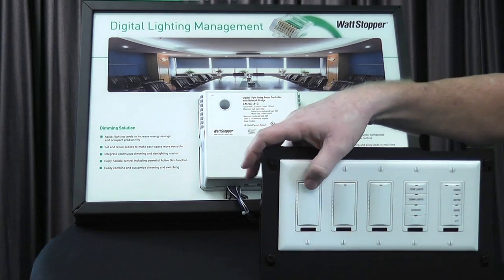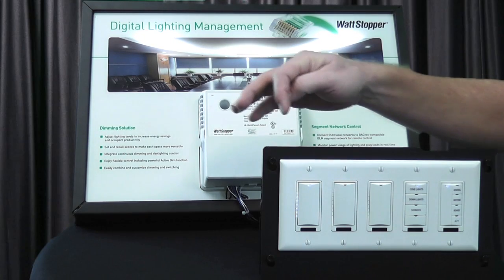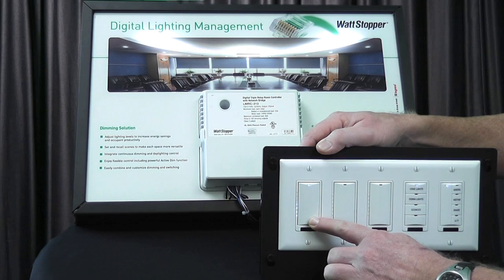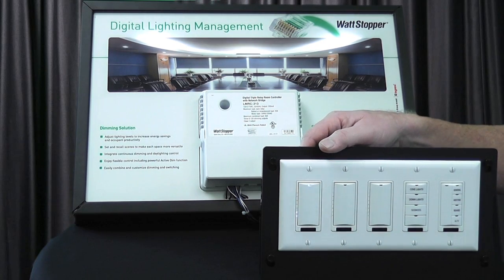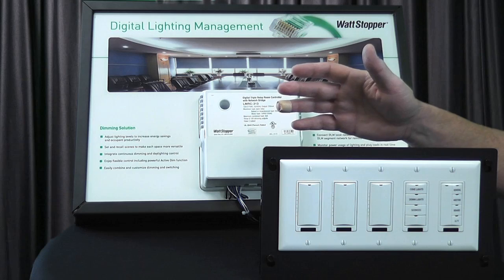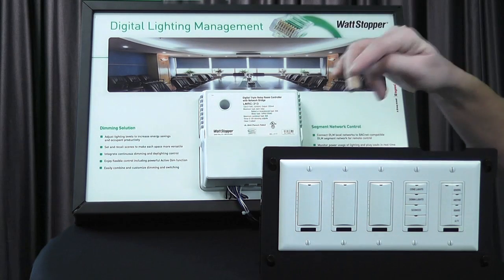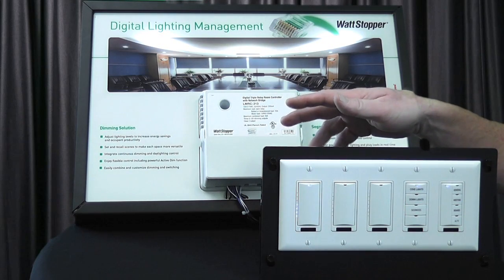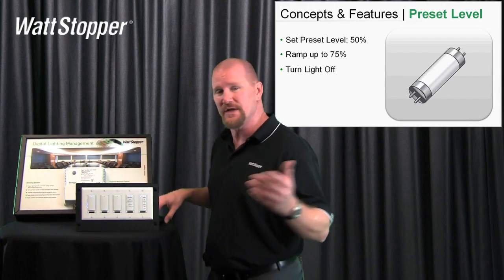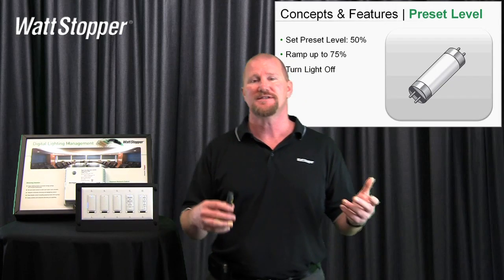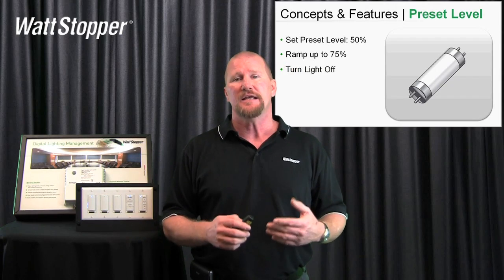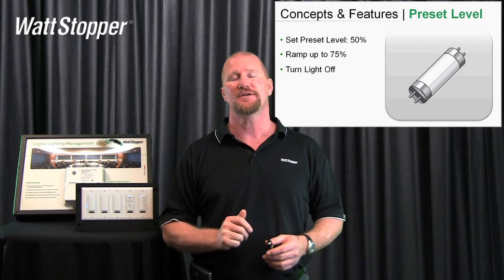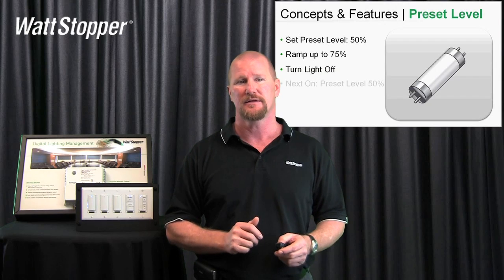Over here on the keypad, I'm going to turn on the first dimmer. I'll dim down to 50%. When I turn it off, the preset level by default is 50% — that's the last level the dimmer was at. If I tap it, it comes on to 50%. The feature we're going to give you with digital lighting management is the ability to set a persistent preset level: I'll set a preset level of 50%, and no matter where I leave the load, every time I turn it back on, it's going to come on to 50%.